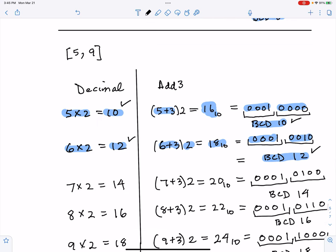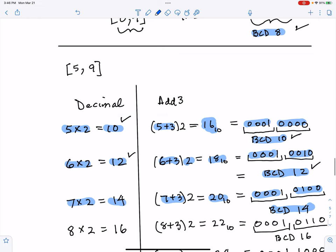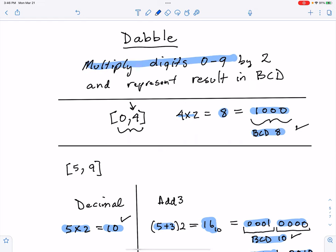So you can go through all the combinations. 7 times 2 is 14. 7 plus 3 because 7 is greater than or equal to 5. So 7 plus 3 is 10 times 2 is 20. Convert that, 16 plus 4. That's BCD 14. So I've done the rest of these. You can take a look and convince yourself that this is performing this statement: multiply digits 0 through 9 by 2 and represent the result in BCD.